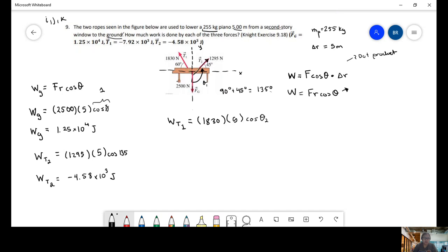So, now we do the same. We're going to grab the angle from here all the way here. So, we're going to have 180 plus 30. So, that's 210. So, it's going to be cosine 210. So, work of tension 1 equals cosine 210 times 5 times 1830.